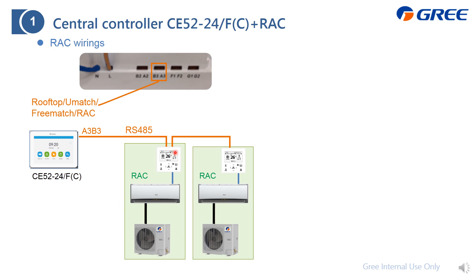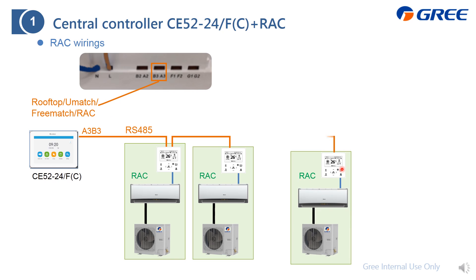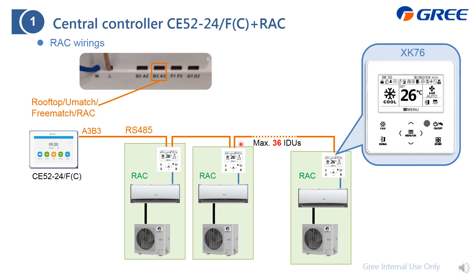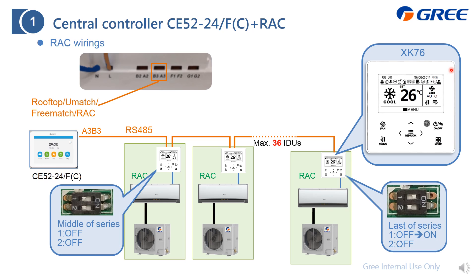You can find that we actually control the wire controller, not the indoor unit directly. But through the wire controller, we can fully control this residential air conditioner. Just connect to A3B3 here. It can connect to the MAX36 residential air conditioner. The wire controller is SK76, and it is an RS485 connection. We recommend adding a 120-ohm resistor. Here is the part code just for your reference.